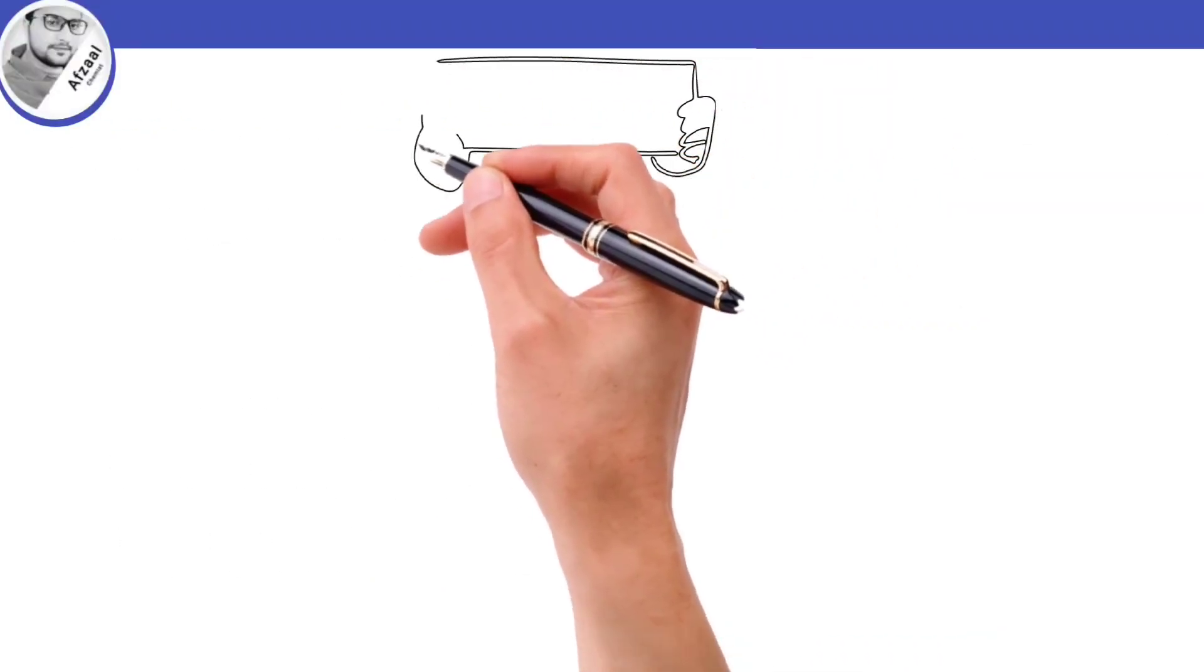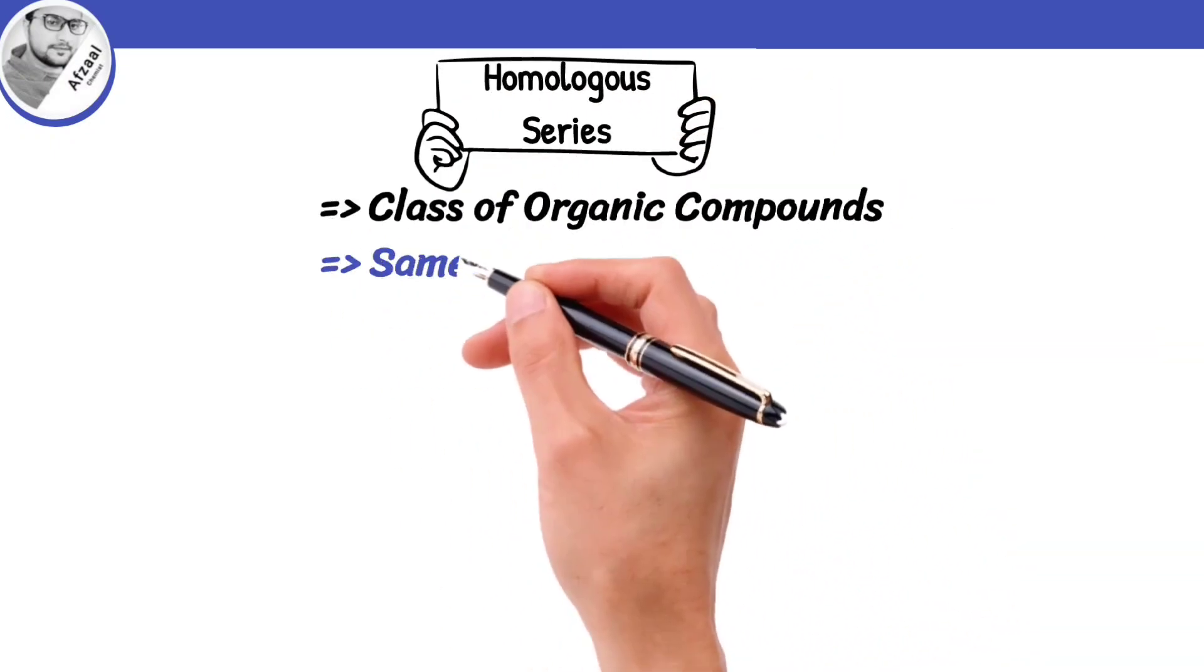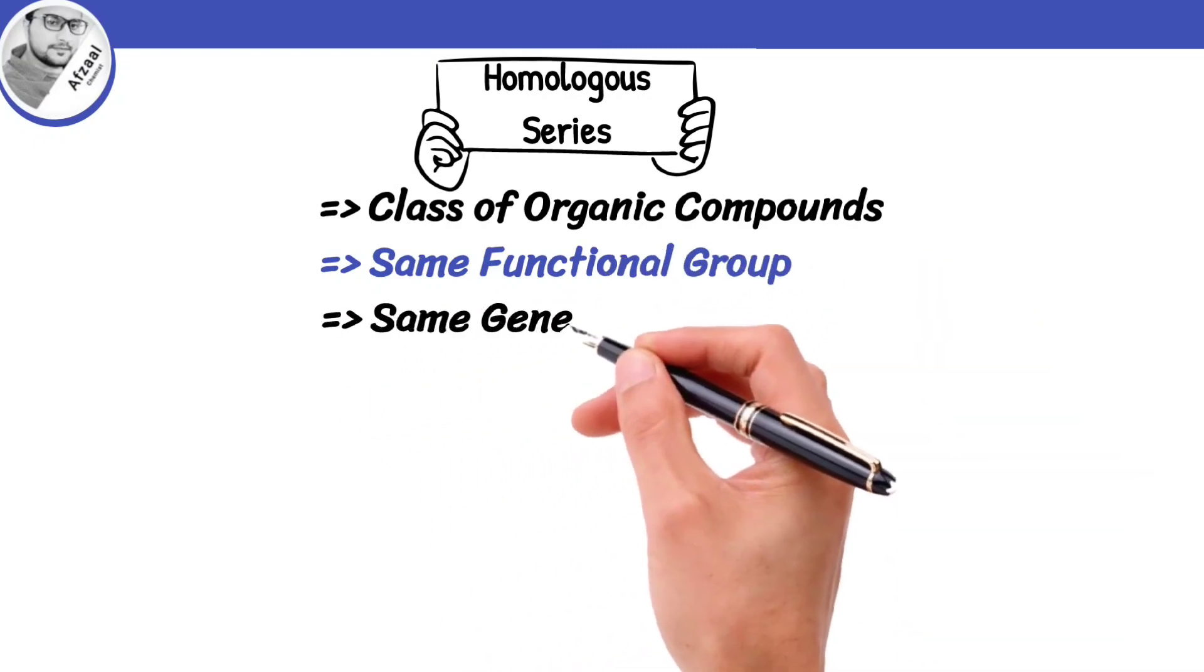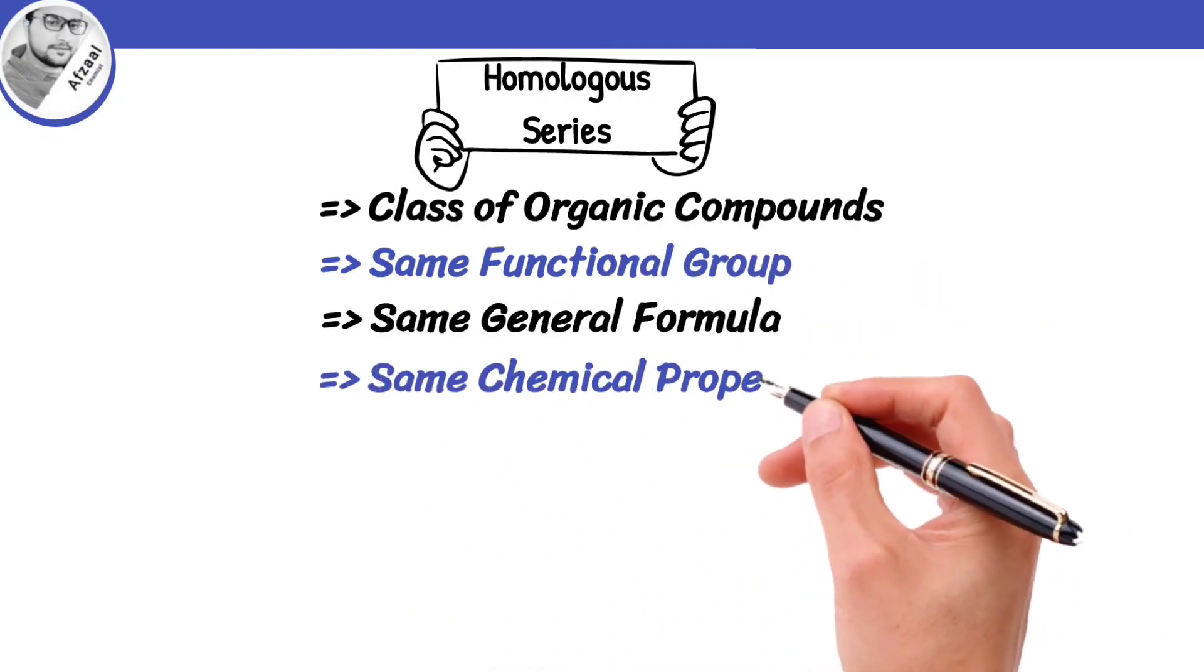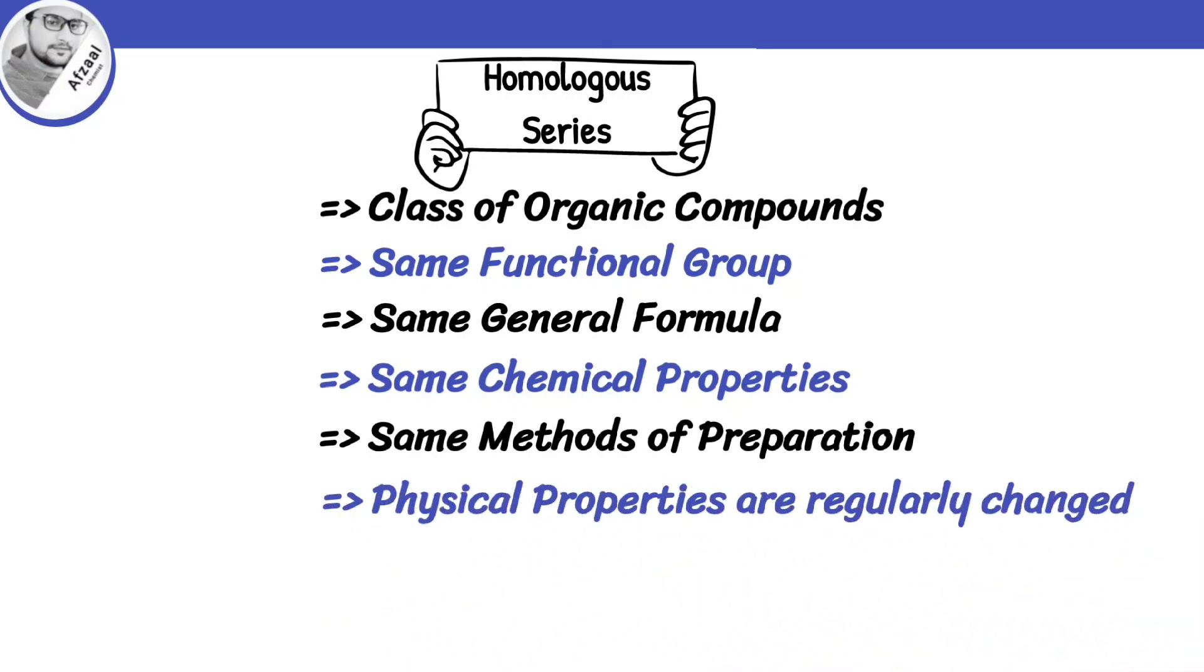This is a summary of the whole concept. Homologous series is a class of organic compounds having same functional group, same general formula, same chemical properties, same methods of preparation, and physical properties that are regularly changed along the series.